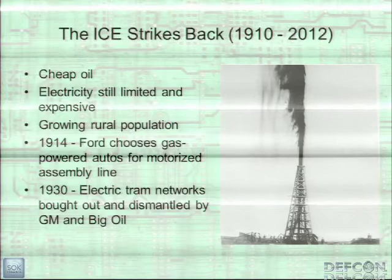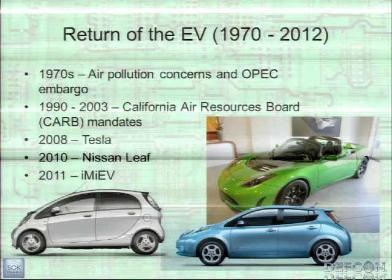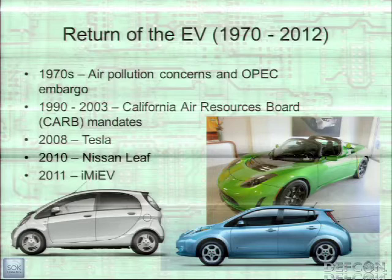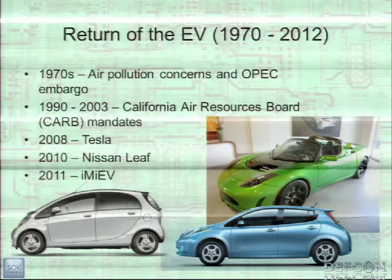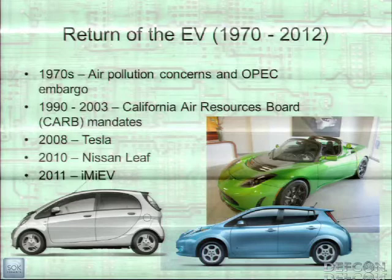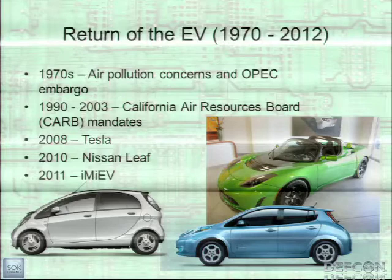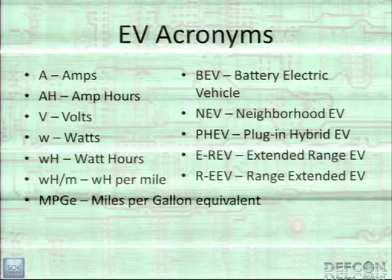Originally, electricity was really expensive — people didn't have it in their homes — and once oil was struck, it was a lot cheaper to drive gas cars. There have been a few events in history that caused EVs to have surges: an OPEC oil embargo, California CARB mandates, and recently the Tesla, Nissan LEAF, and a few others hitting the market. Primarily this is because of advances in smartphone batteries, which have really driven battery technology to make an electric car feasible.